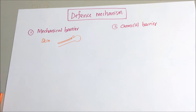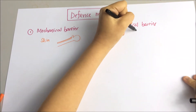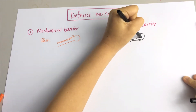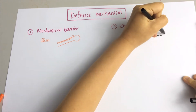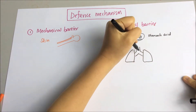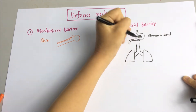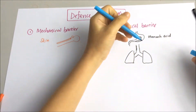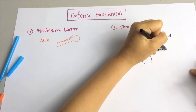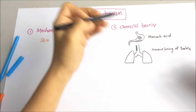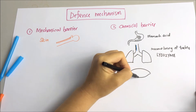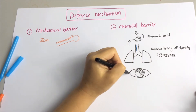The sebaceous glands in the skin produce oils that help to kill microorganisms. As for chemical barriers, the first example is stomach acid — the stomach contains hydrochloric acid which can destroy any microorganisms in your food. The second example is trachea cilia — tiny hairs on the cells that line the trachea — which trap microorganisms in mucus and carry them to the esophagus where they are swallowed and passed out.